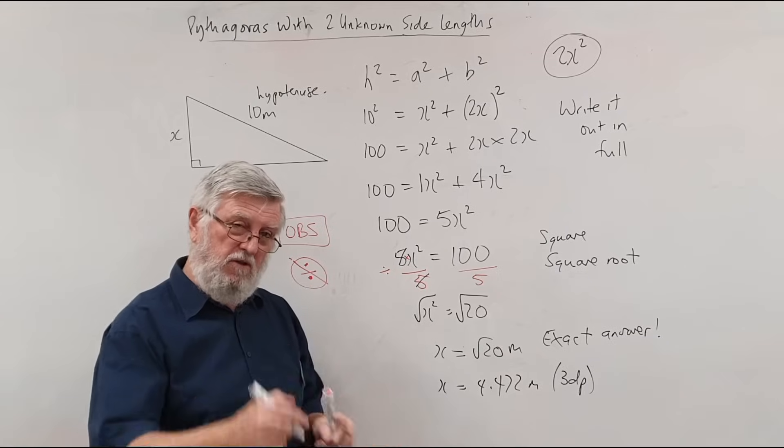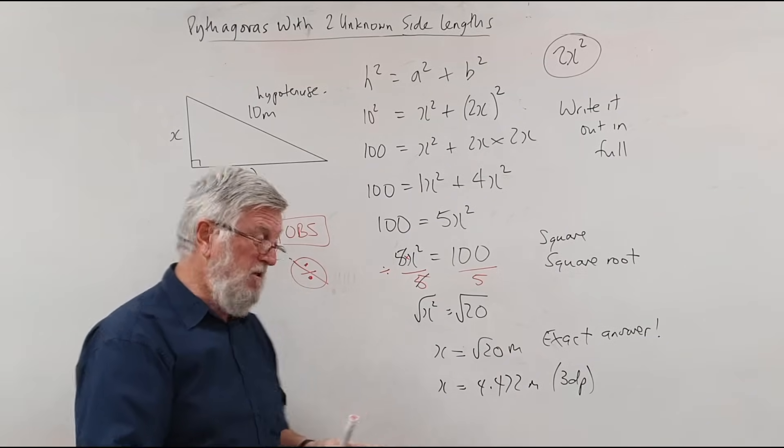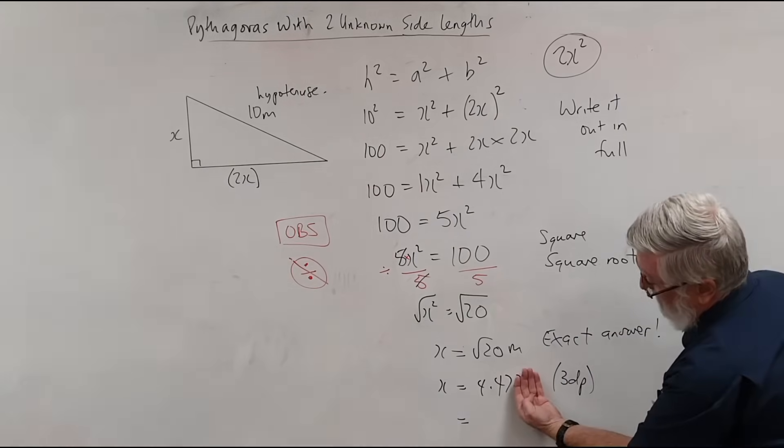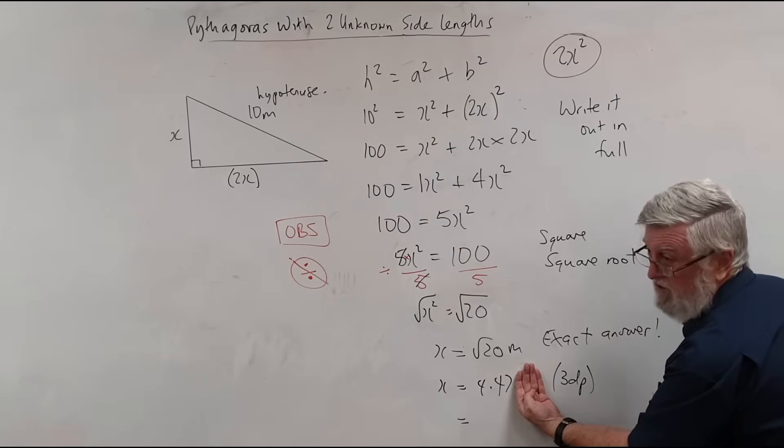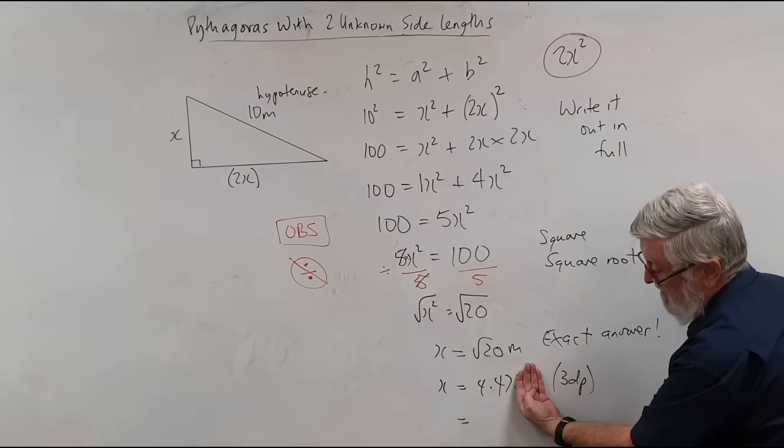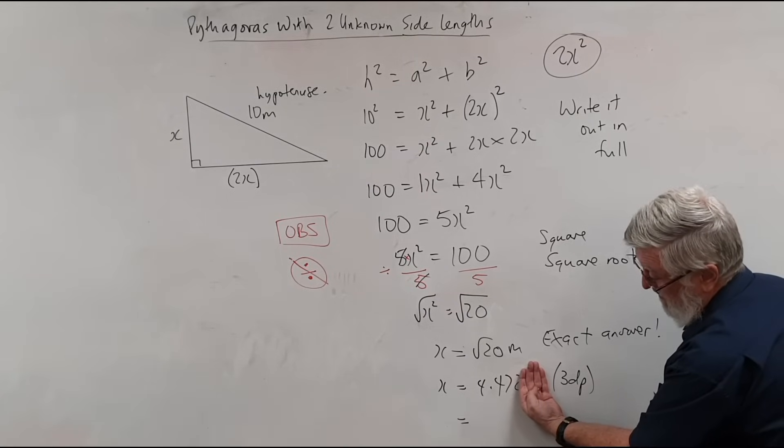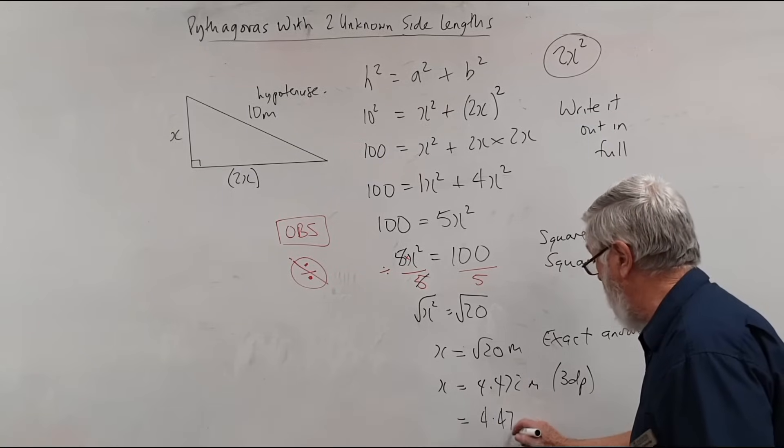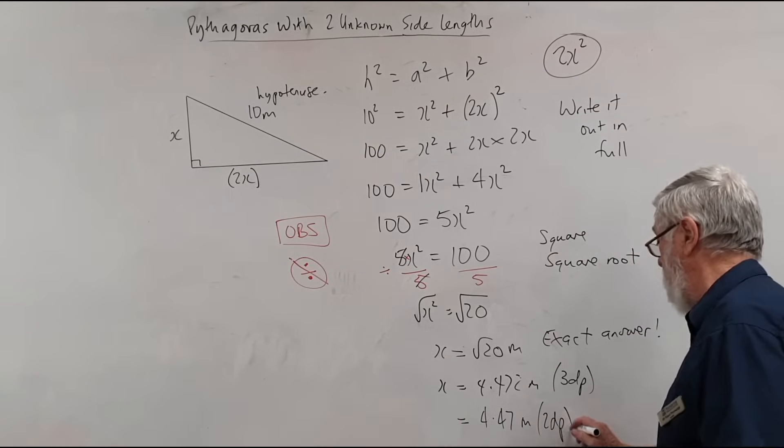Remember, a lot of people will write it as one. A little bit inaccurate, especially this question. If I write it as two, I cover over the two, is it closer to 4.7 or is it closer to 4.8? So that's a little number, so it's closer to 4.7. So I could write that answer as 4.47 metres, and I could say that's two decimal places.